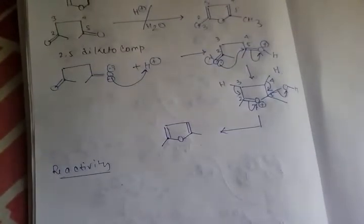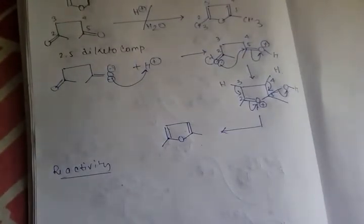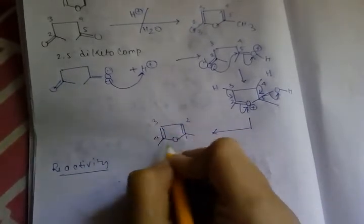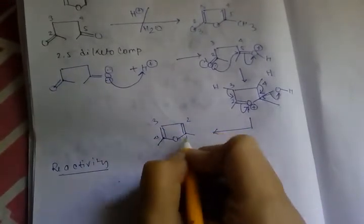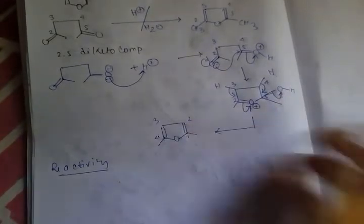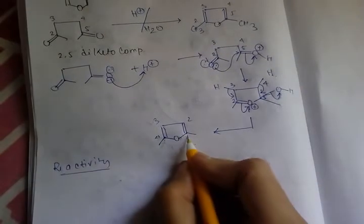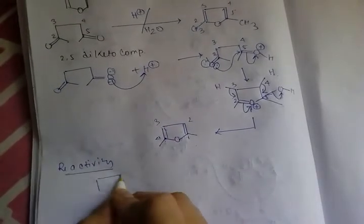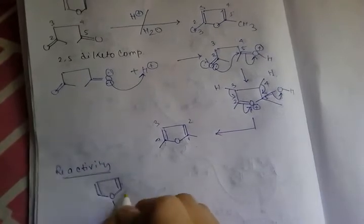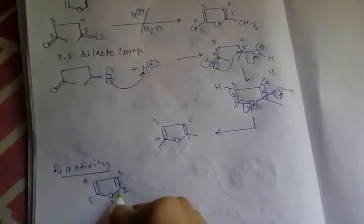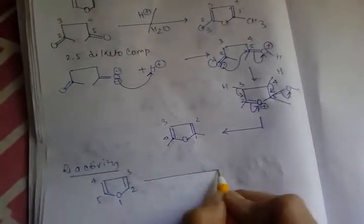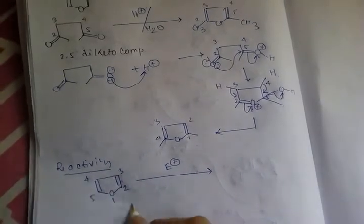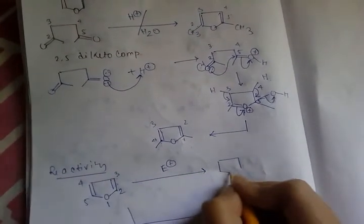Furan undergoes electrophilic substitution. In furan with IUPAC numbering one, two, three, four, five — positions two and five are equivalent, and positions three and four are equivalent. So electrophilic substitution can occur either via the two position or via the three position.